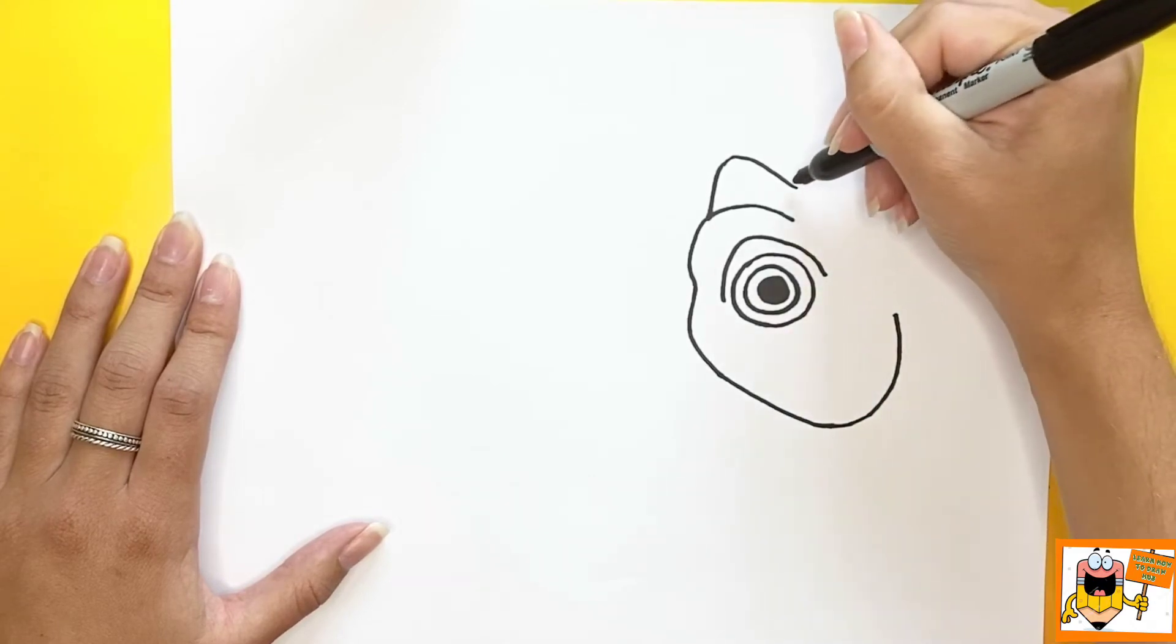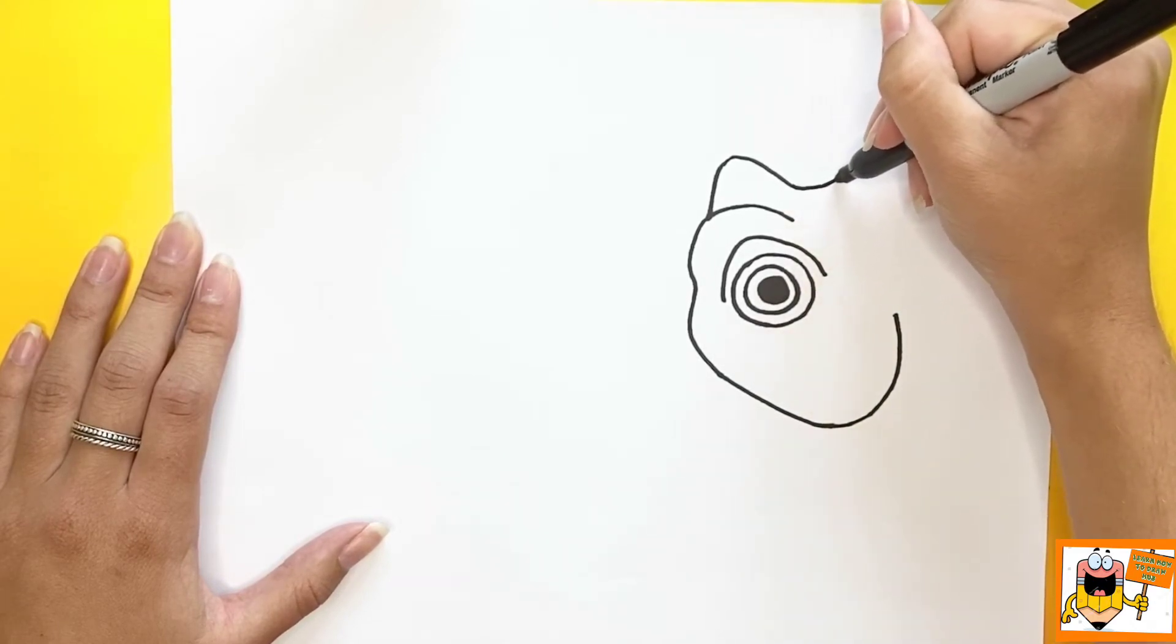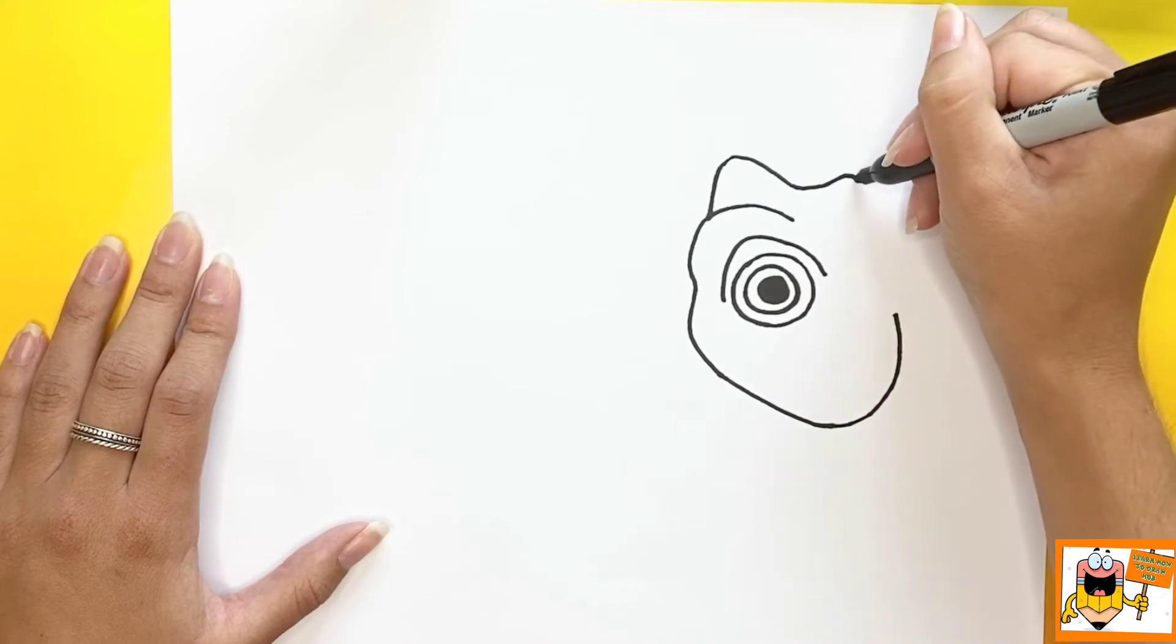Now we're going to move back up to that triangle like shape we made and we're going to connect it over to the right side. This is going to make the face.